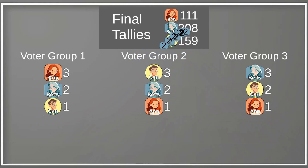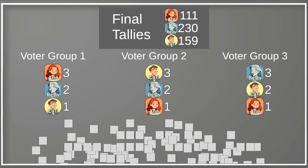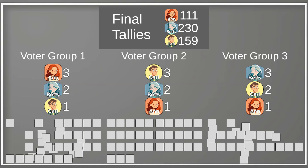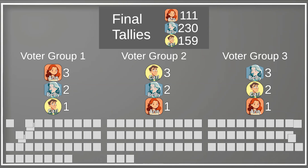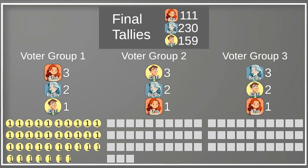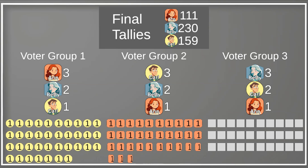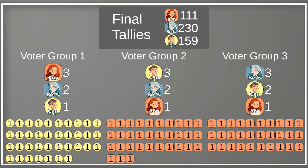Finally, everybody gives 1 point to their third pick. In this case, that's Carl for group one, and all the voters in groups two and three give 1 point to Anne, since Anne is the third pick for voters in both of those groups.